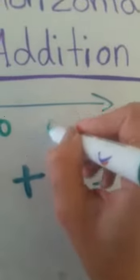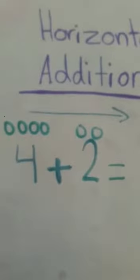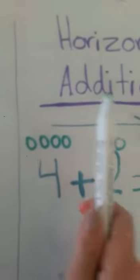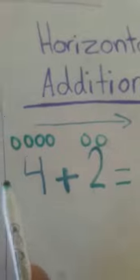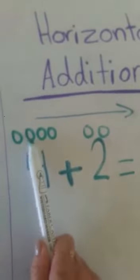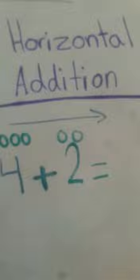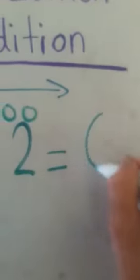So for number four I use four counters. One, two, three, four. And for number two I put two counters. Now what should I do? I should count in all. Let's count them in all. One, two, three, four, five, six. So my answer is six.